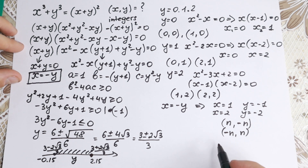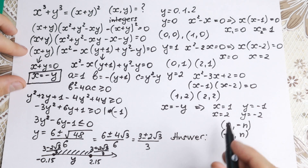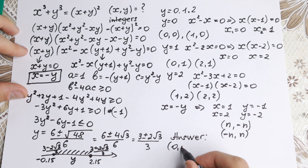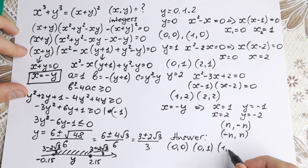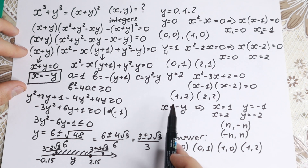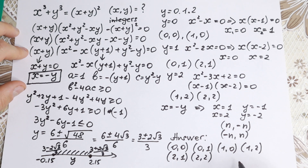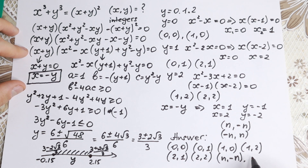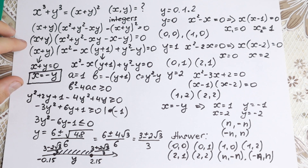Let's write our final answer. Starting with the constant answers: first pair (0, 0). Second pair (0, 1). We have (1, 0). We have (1, 2). These are four pairs. Two more pairs: (2, 1) and (2, 2). And of course, our pairs n and minus n — we don't know the value of n — and minus n and n. This is our answer.